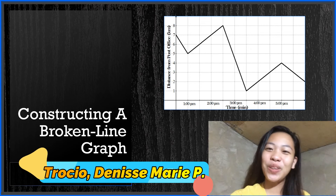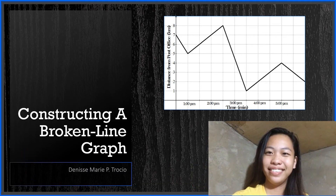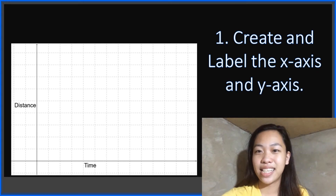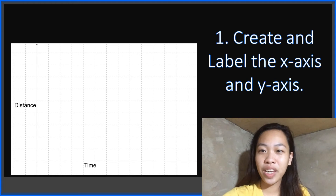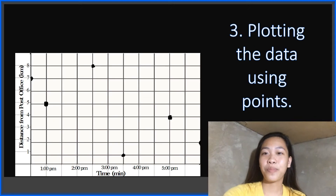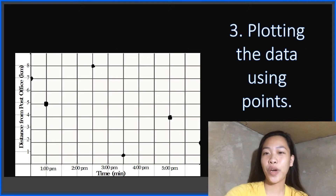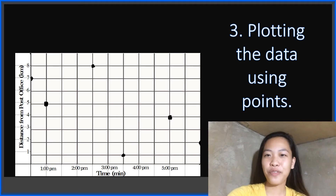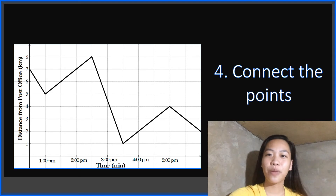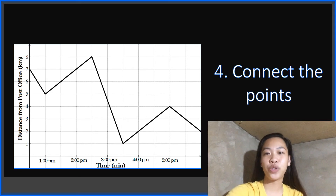Let me show you how to construct a broken line graph. The first step is to create your x and y-axis, then label them depending on the units used in the problem. The second step is to write the scale showing your intervals. The third step is plotting the data using points — plot a point for each pair of values. The fourth step is to connect the points with a straight line from left to right.